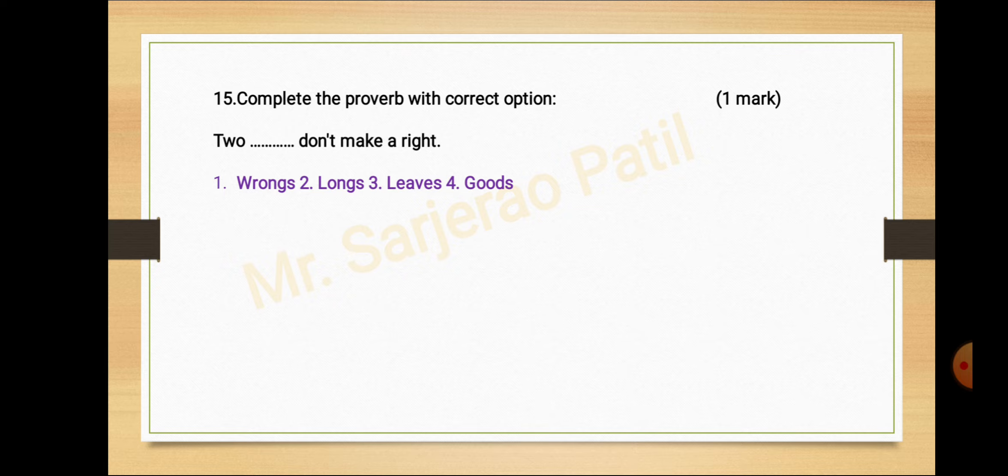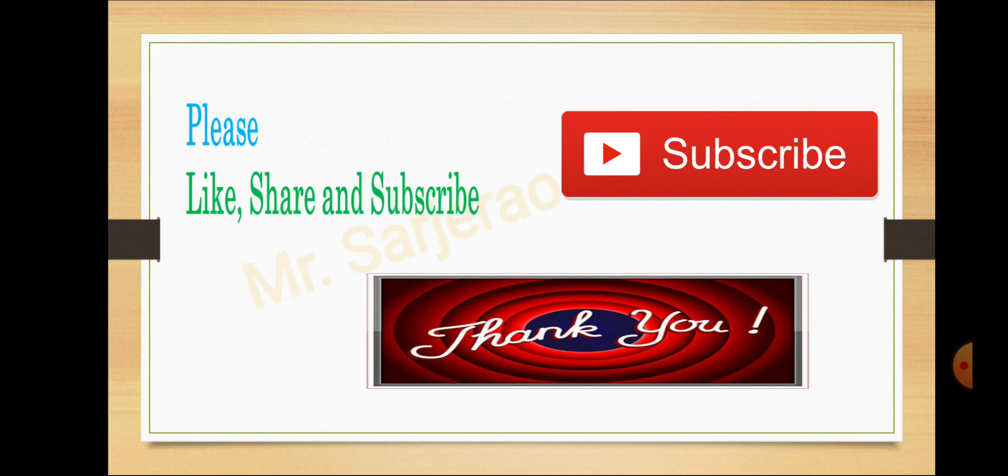Question fifteen, complete the proverb with the correct option. Two dash dash don't make a right. Answer is wrongs. Two wrongs don't make a right. Option number one, wrongs.